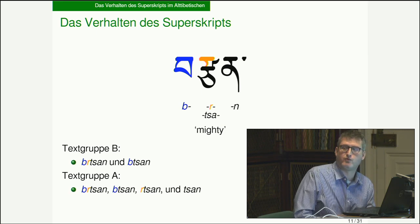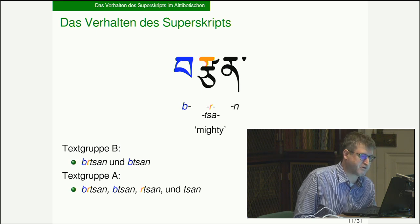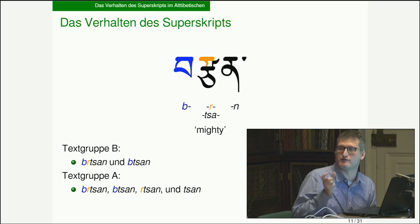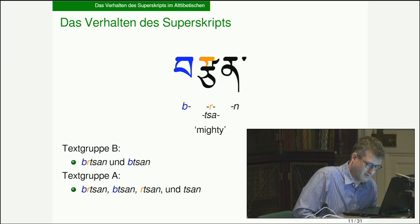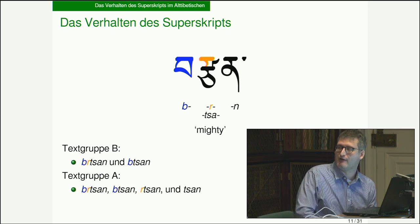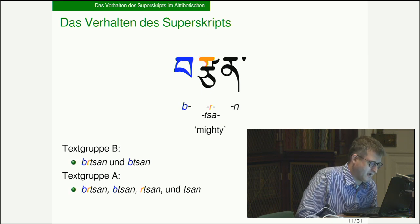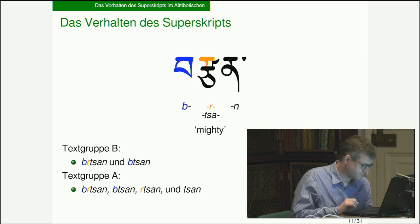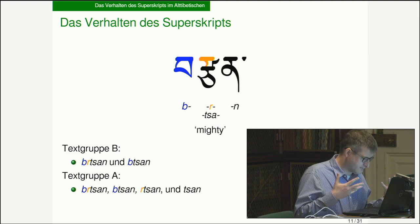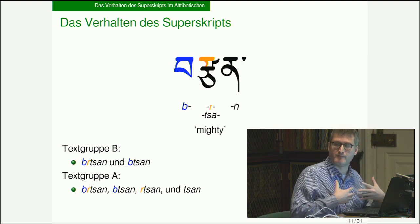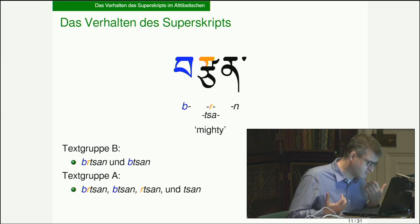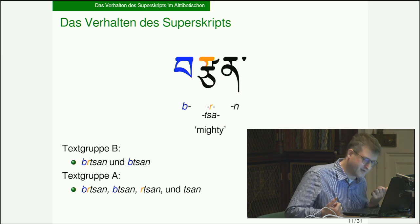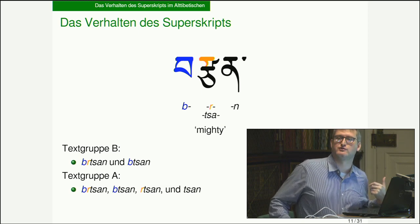I'll do this primarily with one morpheme as my example: 'brtsan' in Old Tibetan, 'tsen' in modern Tibetan. The word means 'mighty' and occurs in words like 'emperor.' It has the 'b' prescript and 'r' superscript. Looking at forms in Old Tibetan texts, they naturally cleave into two groups: Group B, which has two forms — brtsan and btsan — and Group A, which has four forms: brtsan, btsan, rtsan, and tsan.